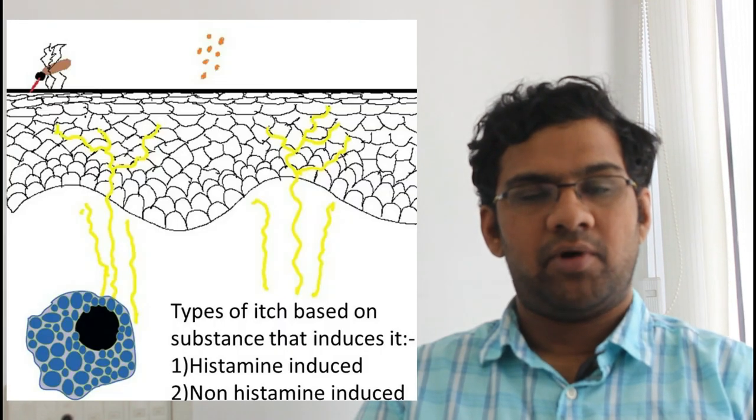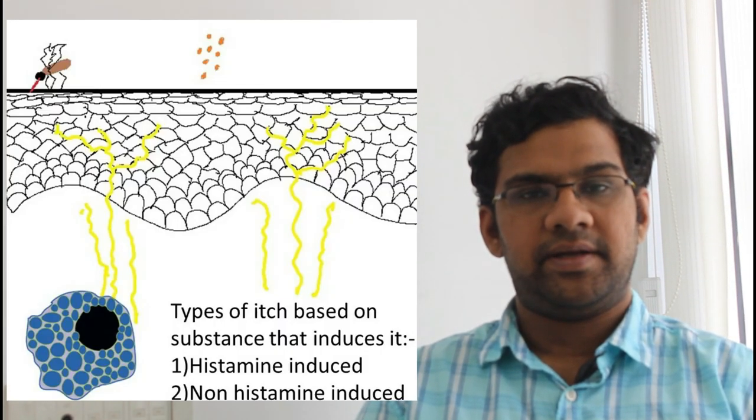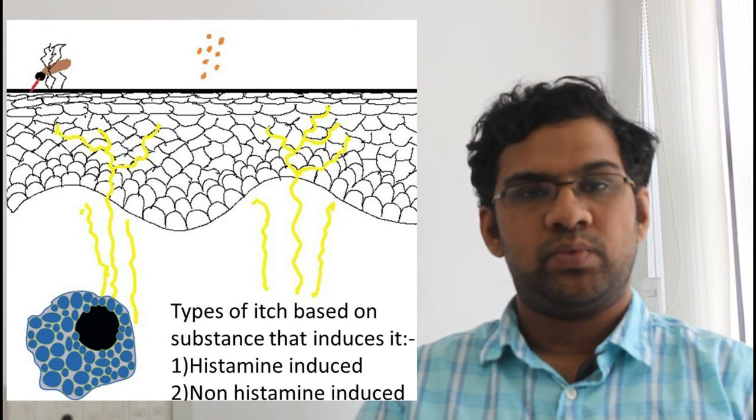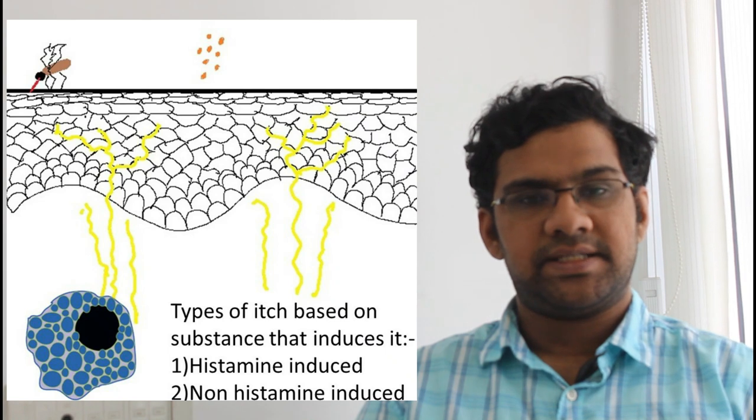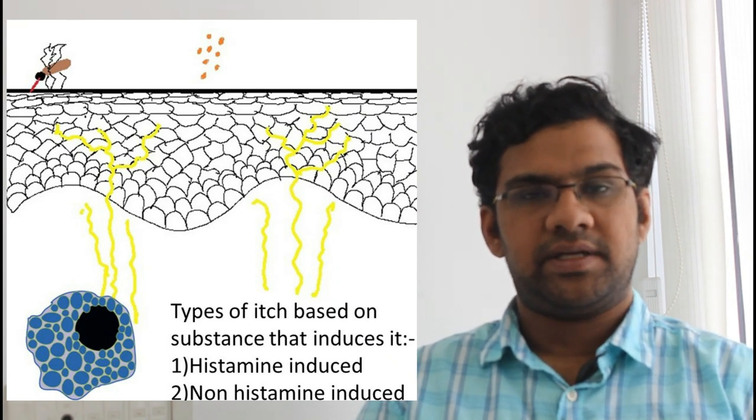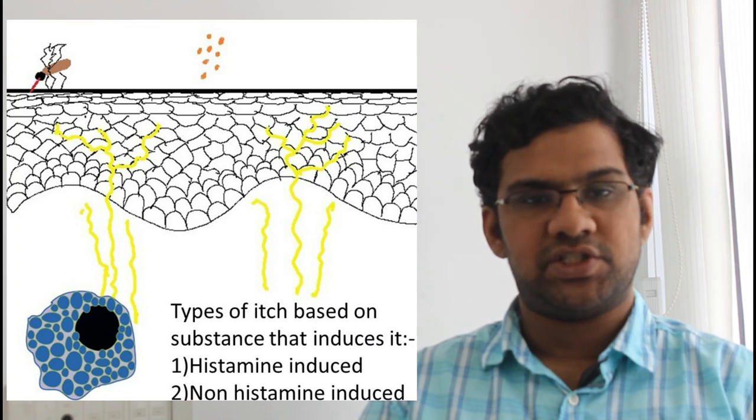Though there are multiple molecular triggers, itch can be further classified into two types: one is histaminic itch, which is caused by histamine, and the other is non-histaminergic itch caused by substances like proteases and cowhage.